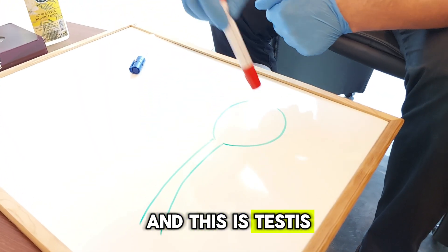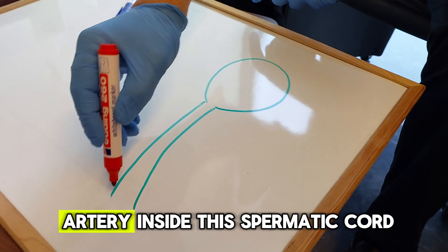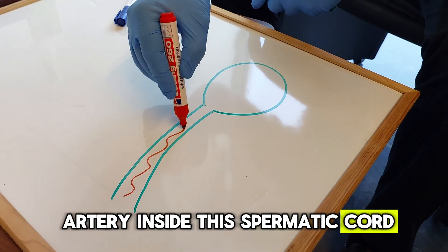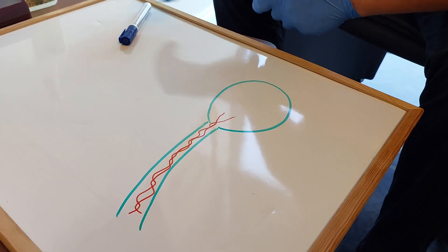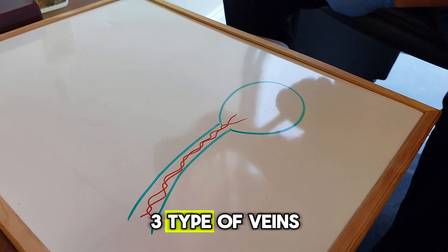This is the spermatic cord and this is the testis. There is an artery inside the spermatic cord feeding the testicle, sometimes two arteries, and around there are two or three types of veins.